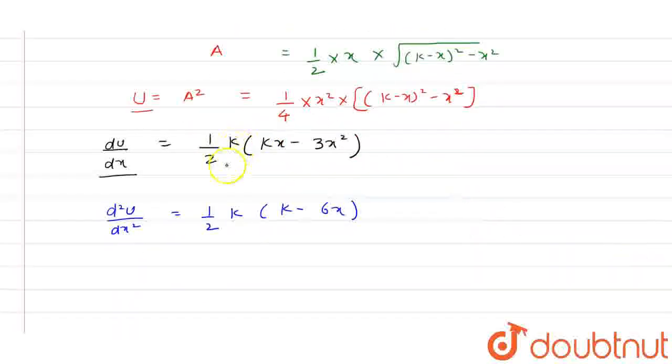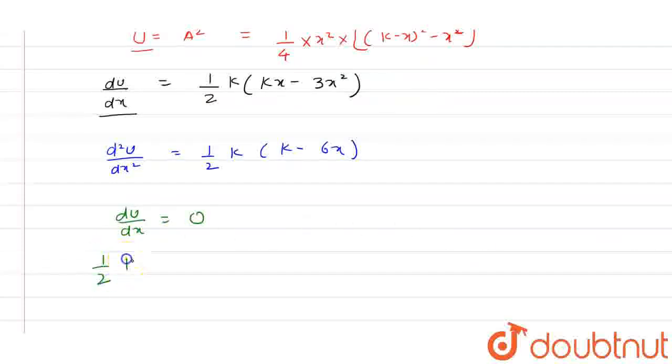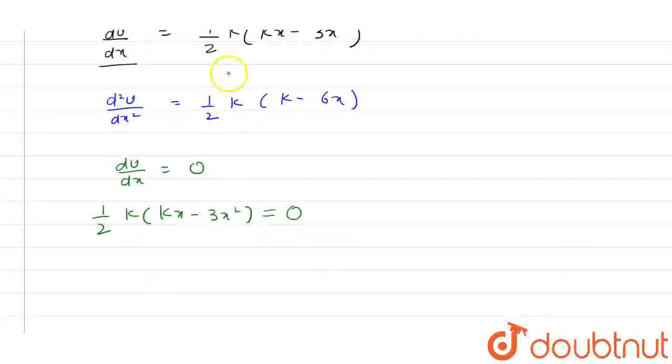Now to find maximum and minimum we have to set dU/dX equals 0. So from here we can say that 1/2 KX minus 3X squared equals 0. So now from here we can say that K equals 3X. So X equals K/3.